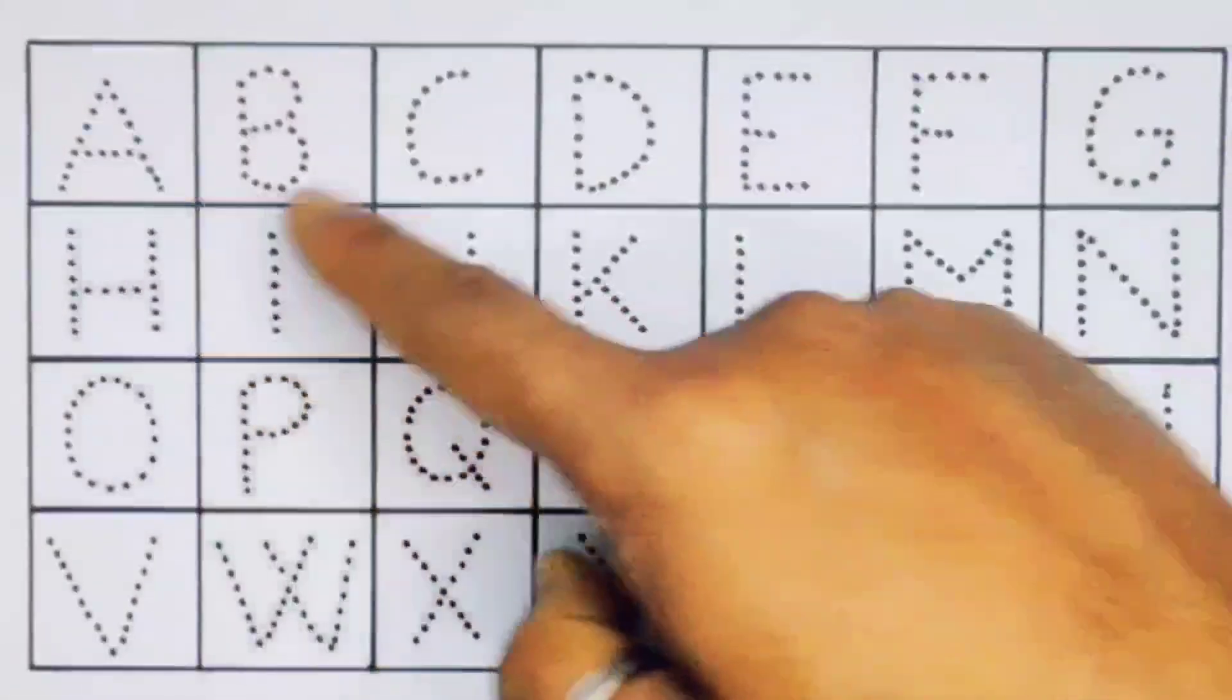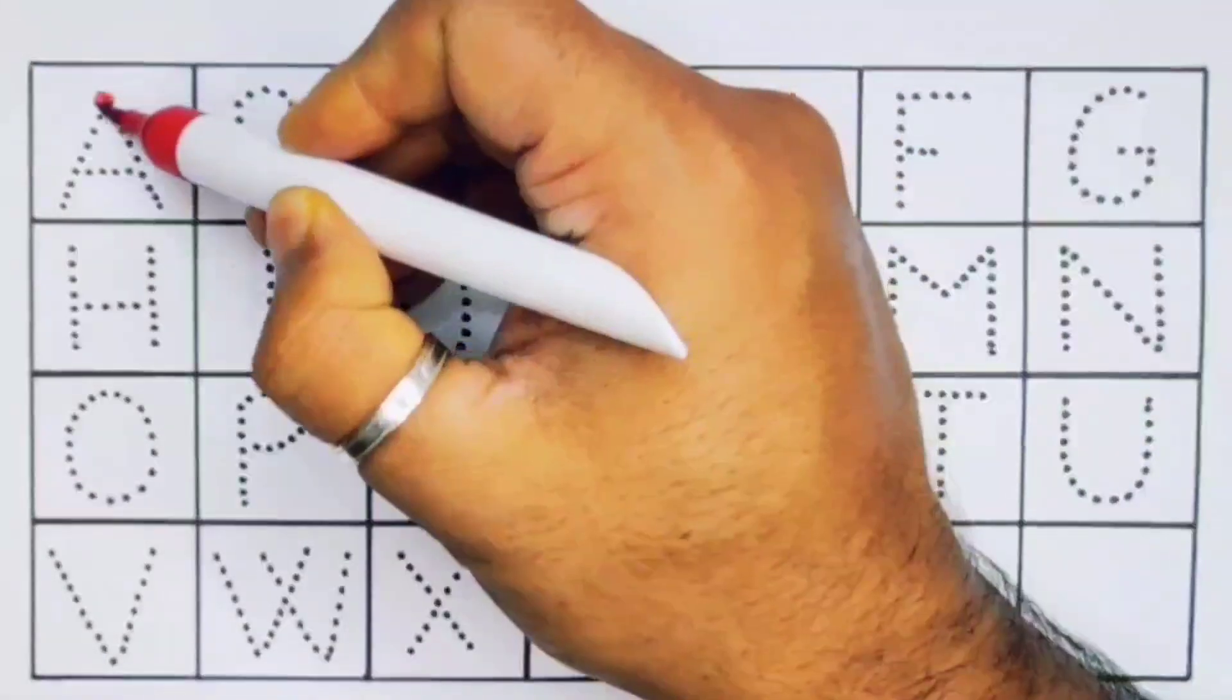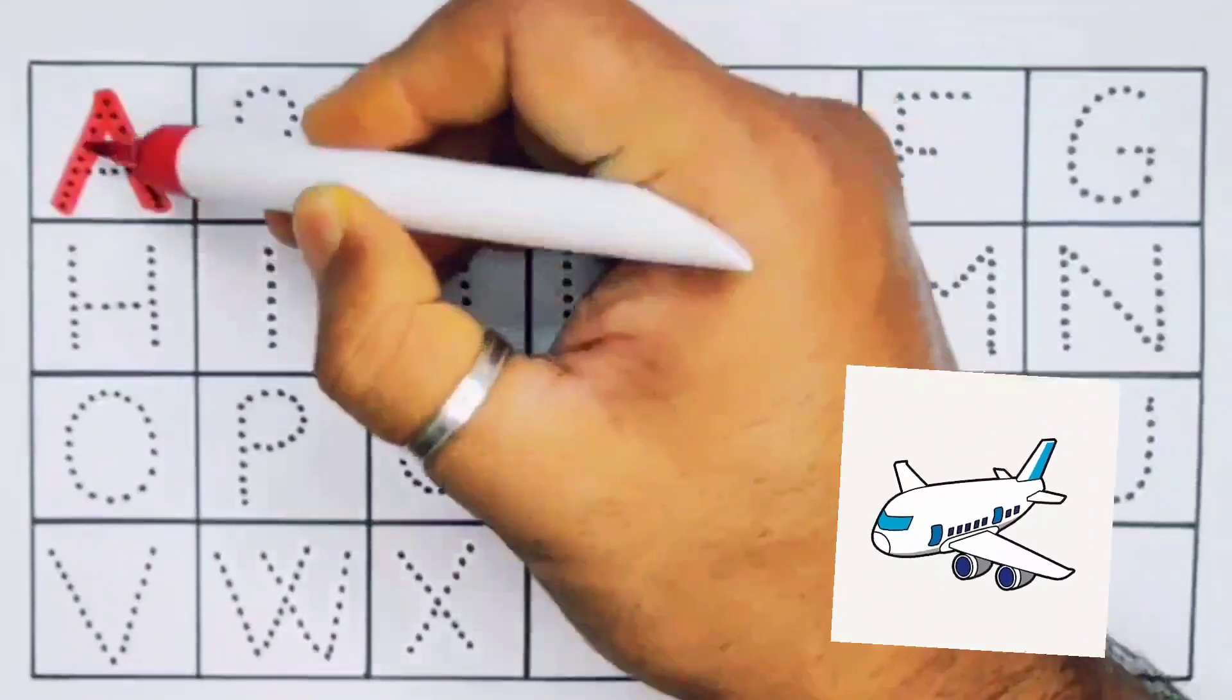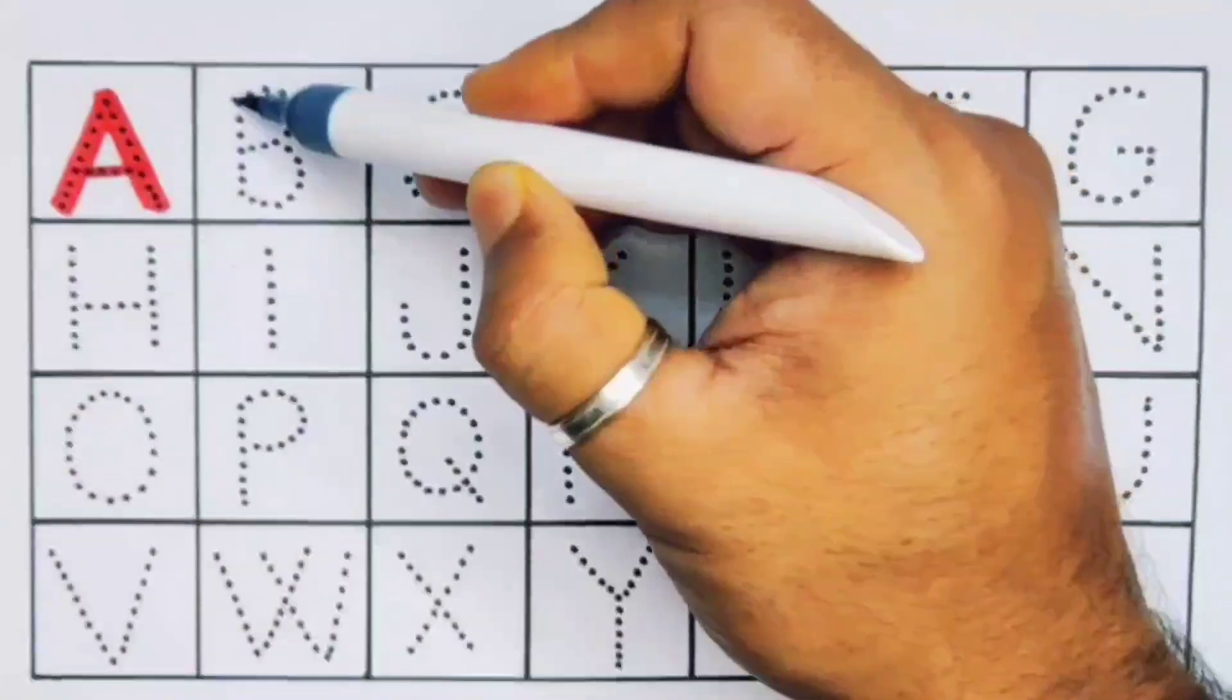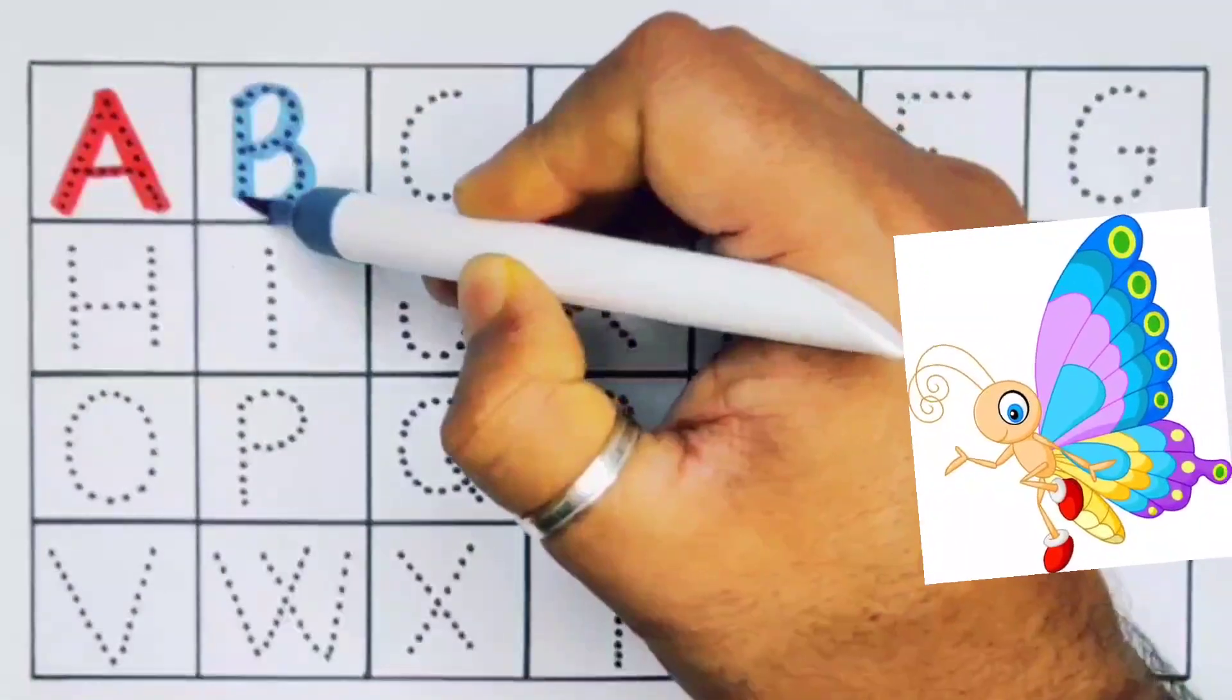Now let's learn the alphabet A to Z. First A, A for arrow plane, A for arrow plane. Next kids B, B for butterfly, B for butterfly.